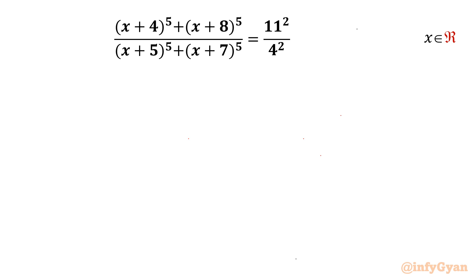Welcome back to InfiGyaan friends. In this video we are going to take up another interesting rational equation challenge. It is (x+4)^5 + (x+8)^5 over (x+5)^5 + (x+7)^5 equal to 11² over 4². We have to find out all real solutions. So let's get started.